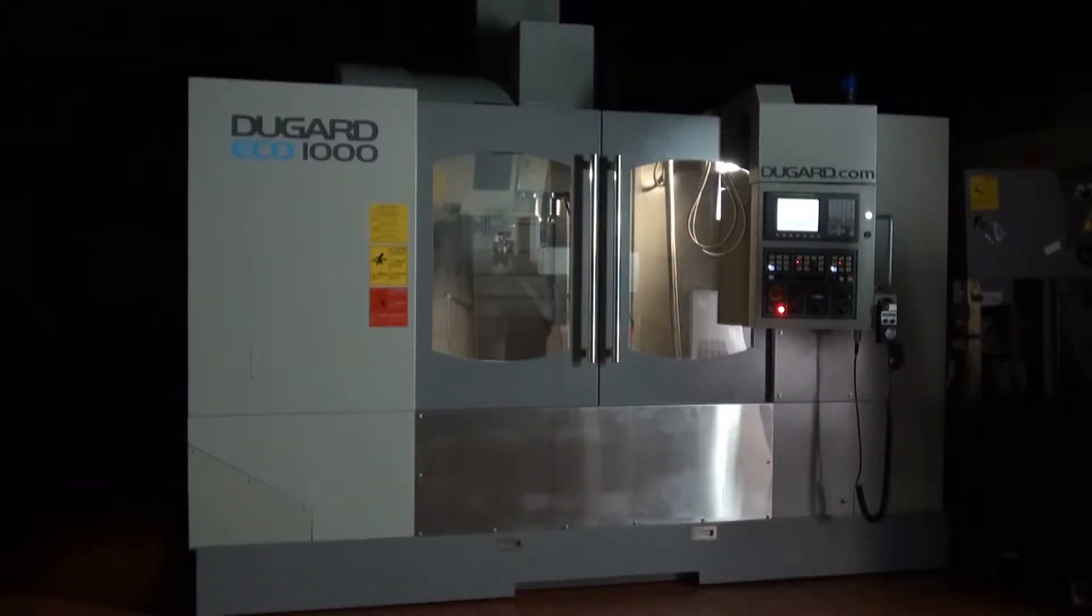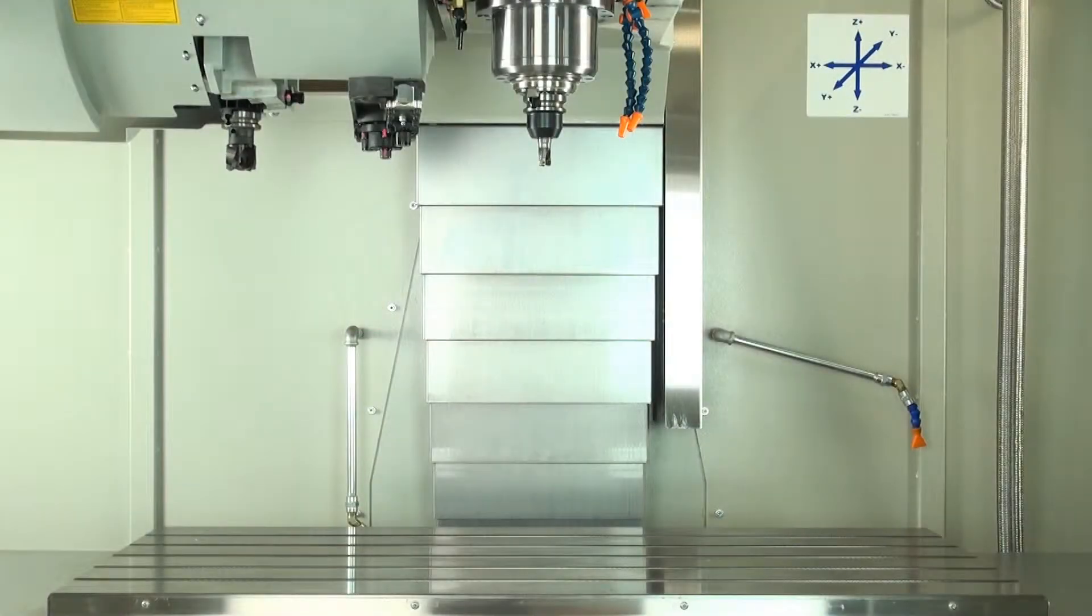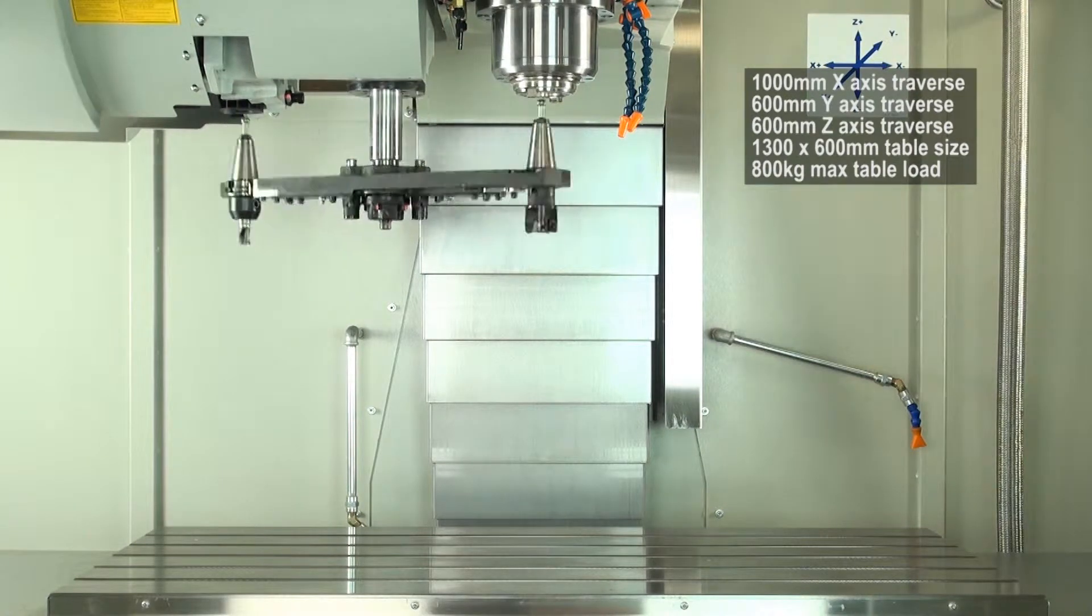The Dugard Eco 1000 CNC Vertical Machining Centre is built to our specification at a very competitive price. The table size is 1300mm by 500mm.